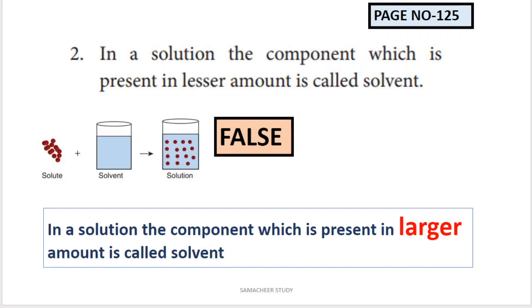True or false: the component present in lesser amount is called solvent - this is FALSE. In a solution, the component present in lesser amount is called the solute, and the component present in larger amount is called the solvent. So solvent should be changed to solute.